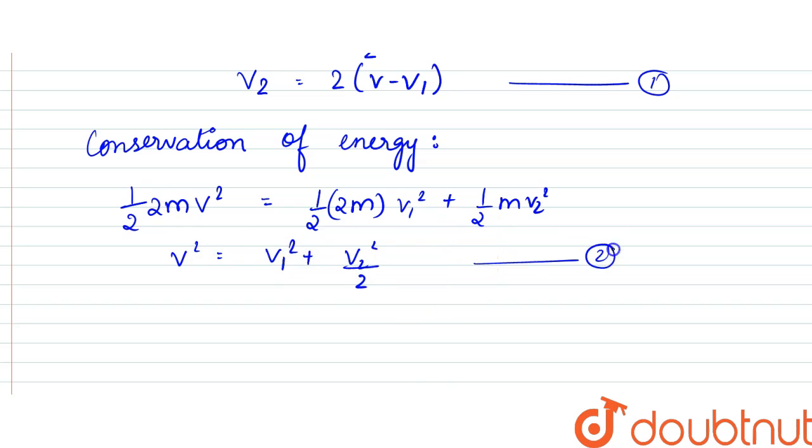So this is our second equation. Now we will substitute this equation in the second equation, so we get v² to be equal to v₁² plus half into 4 into (v minus v₁) whole square.